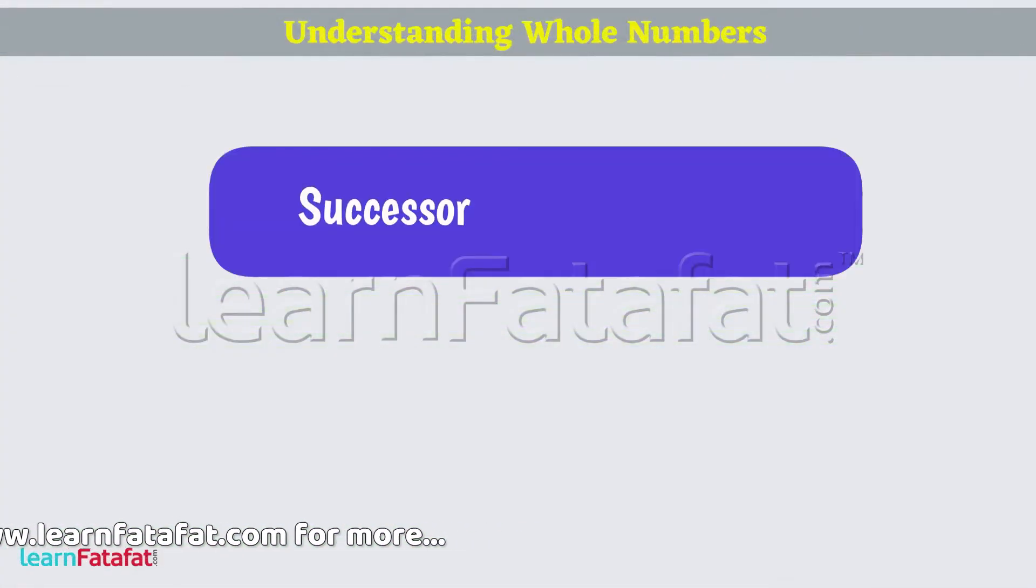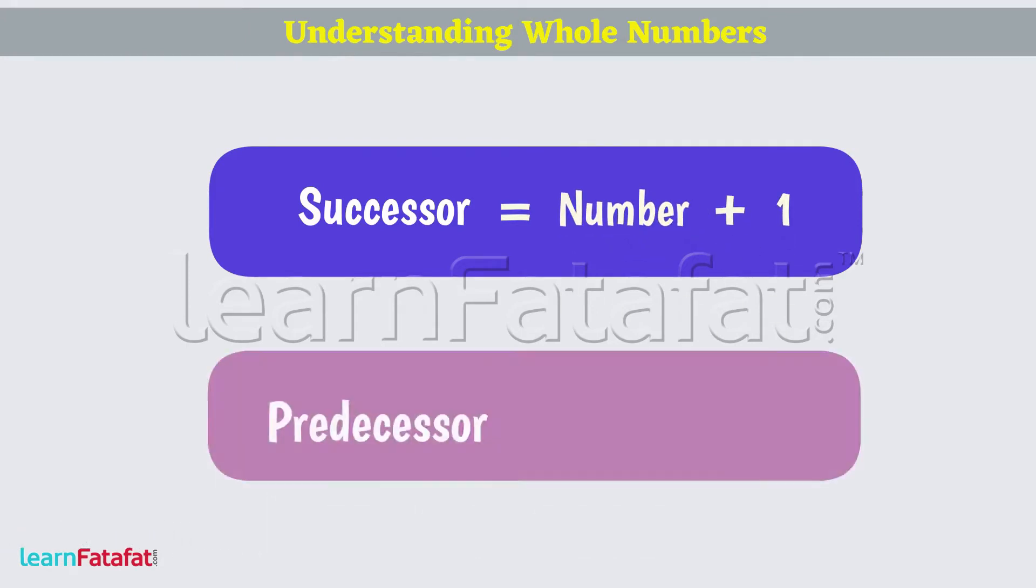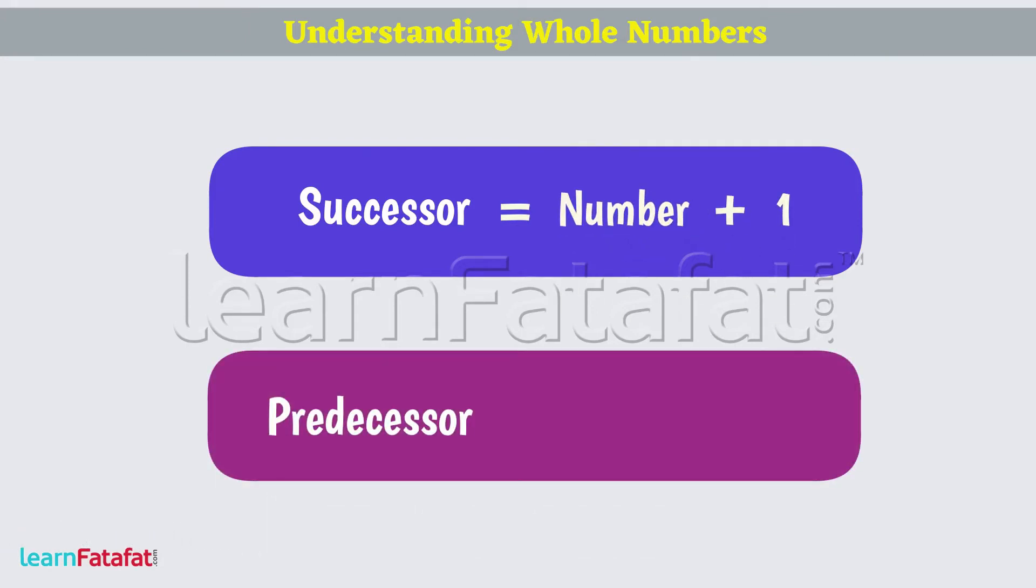Successor is a number obtained by adding 1 to the given number. Predecessor is a number obtained by subtracting 1 from the given number.